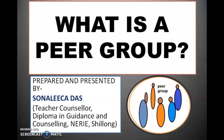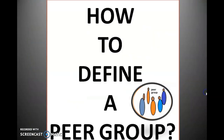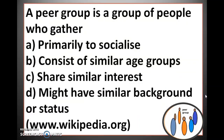Such groups are called peer groups. So today we are going to learn about peer group in a more formal way. A peer group is a group of people who gather primarily to socialize, consist of similar age groups, share similar interests and might have similar background or status.